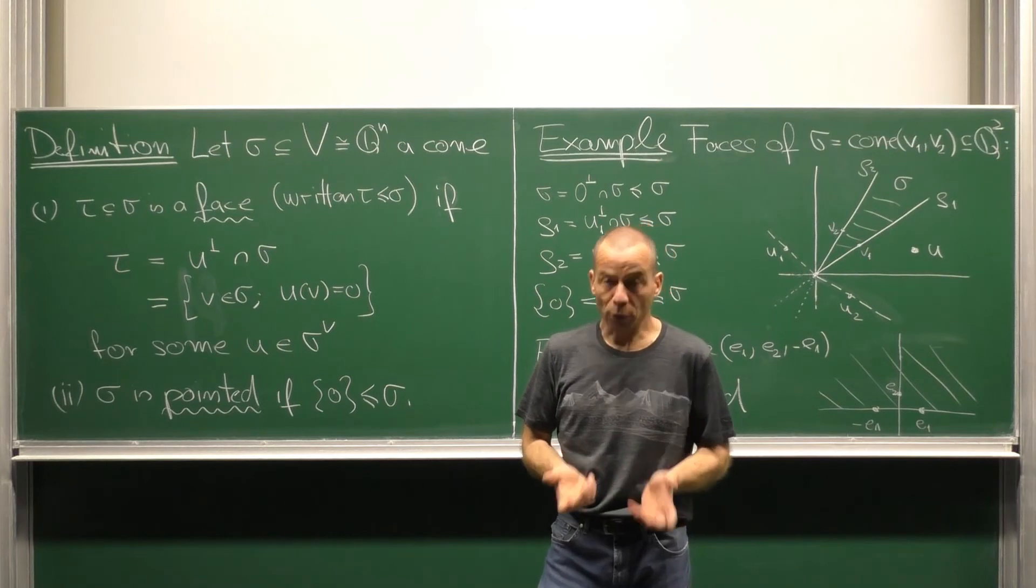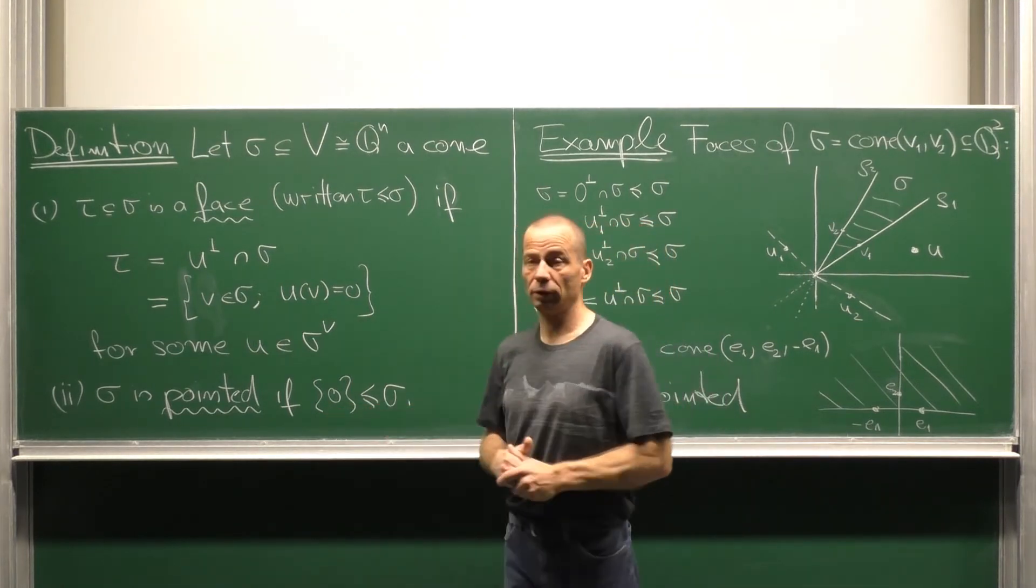The cone sigma is called pointed if it has zero cone as a face.